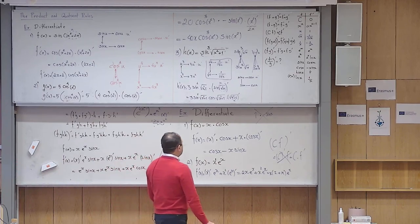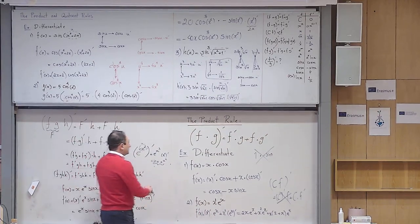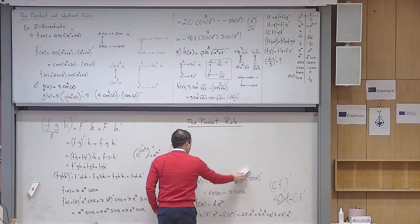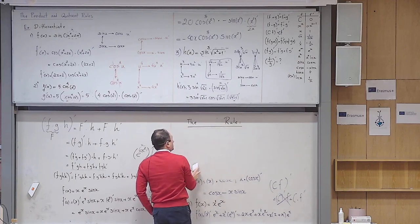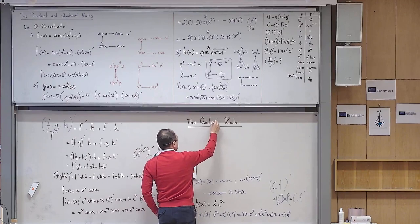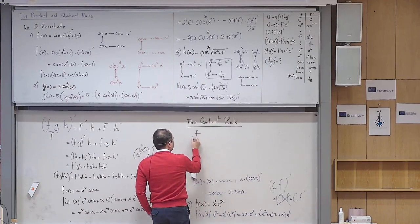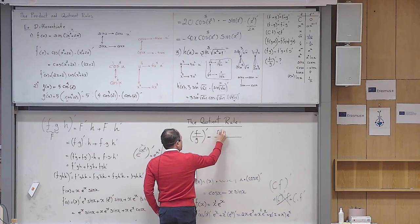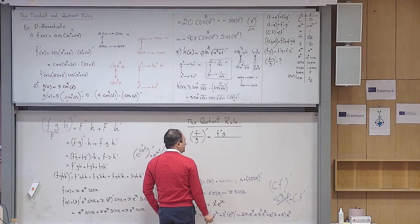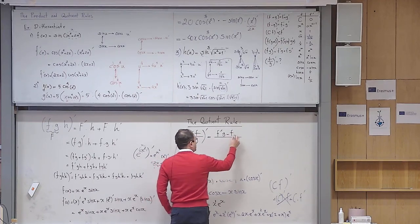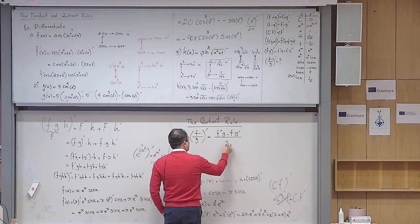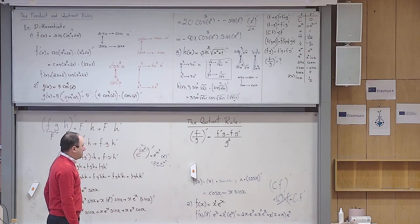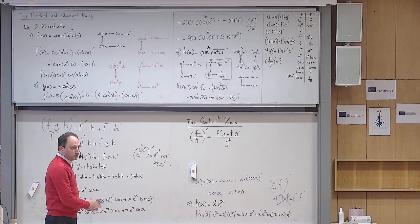That is the product rule. But there is one rule left: the quotient rule. The quotient rule: the derivative of f/g equals the derivative of the numerator times the denominator itself, minus the numerator itself times the derivative of the denominator, all divided by the denominator squared. It is not a very nice formula.